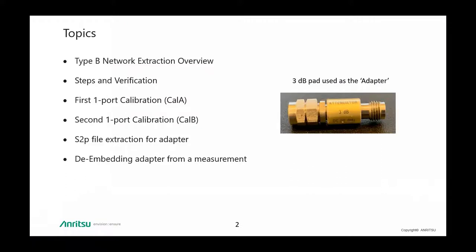I'll begin with a brief overview of the type B network extraction method, then discuss the steps involved in creating the S2P file for the adapter — in this case a 3 dB attenuator or pad. Next, we'll cover the procedure to obtain two calibration setup files (.chx files) with two one-port calibrations, how to create the S2P file, and finally the procedure for de-embedding the adapter from a measurement.